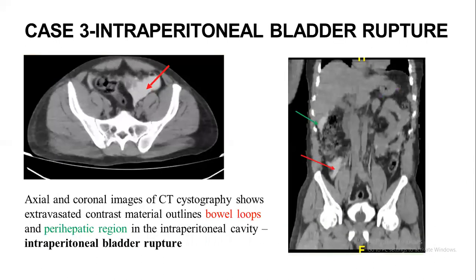Case 3 shows axial and coronal CT images demonstrating extravasated contrast material outlining bowel loops and the perihepatic and subhepatic region in the intraperitoneal cavity, suggesting intraperitoneal bladder rupture.